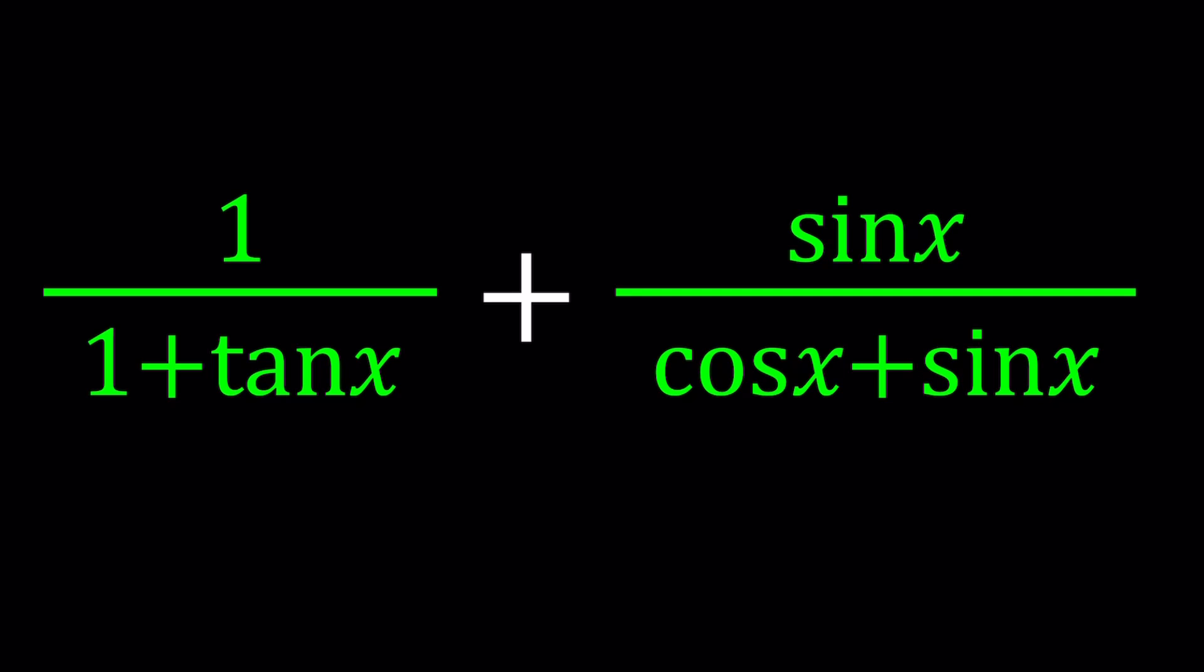So now we have 1 over 1 plus tangent x and sine x over cosine x plus sine x. And then we're going to simplify this expression. Simplifying basically means at the end you may find a numerical answer like 1, negative 1, 2, or a trigonometric function, possibly something like sine x by itself or sine x times cosine x or 1 over tangent x or something like that. But something that is simpler than this.